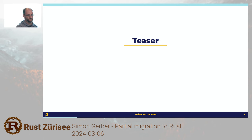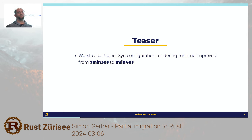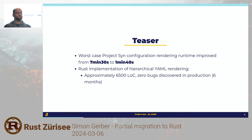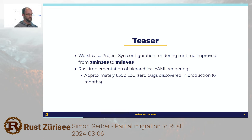Quick teaser of what you're going to see in the next half hour or so. Our ProjectSYN configuration rendering tool runtime — we improved this from seven and a half minutes to one minute 40 seconds by rewriting a tiny part of it in Rust. The Rust implementation is about 6,500 lines of code including tests. And so far in six months we haven't found any bugs in production, which is super nice.